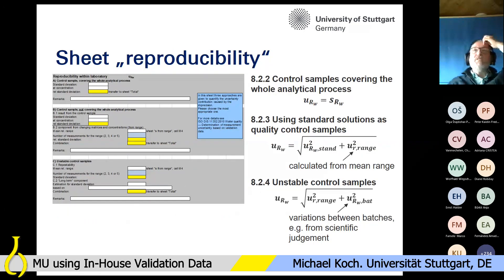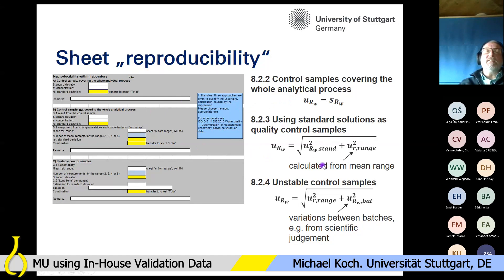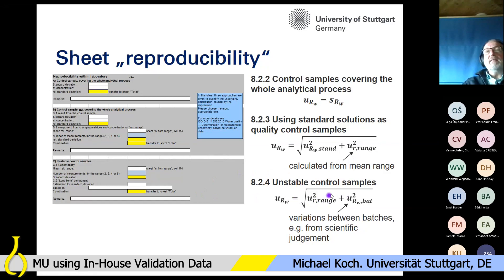In the sheet 'Reproducibility' we have three different blocks directly linked to the chapters of the ISO standard. The first covers control samples covering the whole analytical process. The second is the approach that Timo just explained — using a standard solution plus a repeatability contribution from a range of duplicate or multiple measurements. The third part is for cases where it's not possible to have a stable control sample; in that case you can enter a value from scientific judgment, just an estimate as an expert in the field.